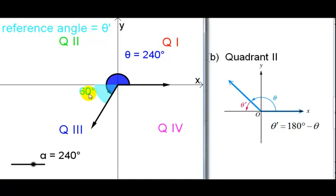How do you get 60 degrees from the actual angle? Well if you notice, from here to the negative x-axis is 180, so we subtract 180 from 240 and we're going to get 60 degrees.